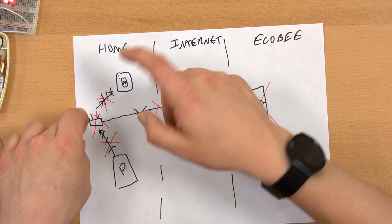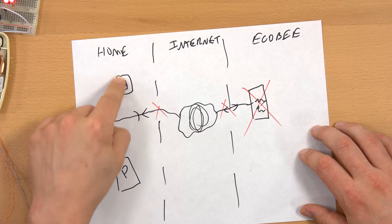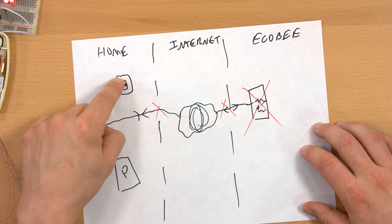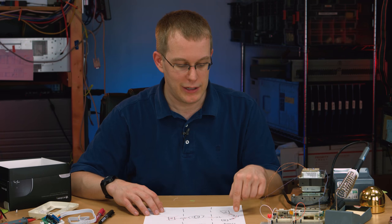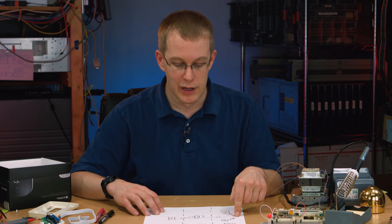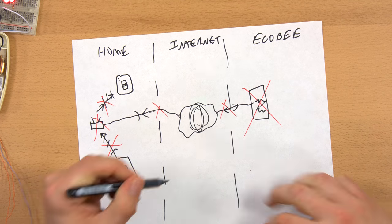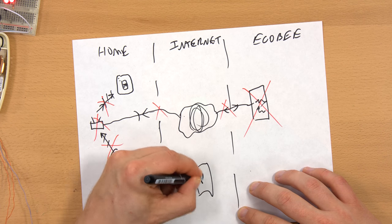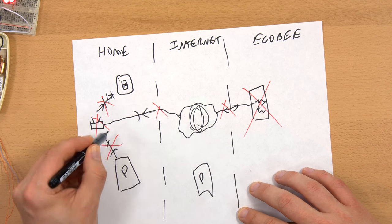I mean, there's no reason the Ecobee couldn't act as a web server, but that would rely on people having the knowledge to open up their router for traffic so when they're using their phone somewhere else on the internet, it can go straight to their house.